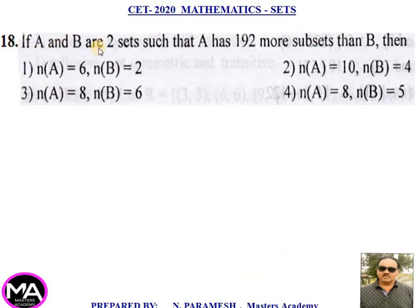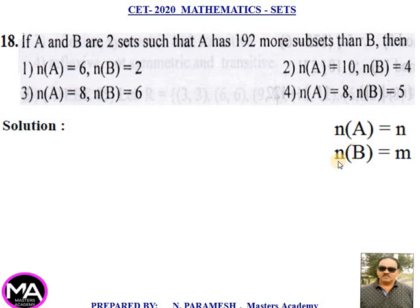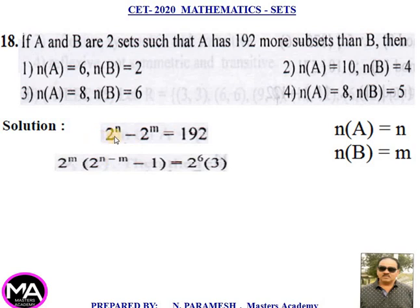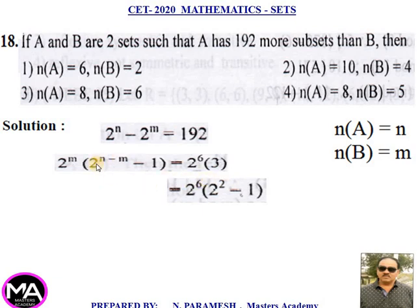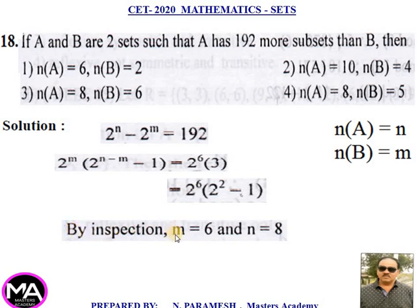18th question. If sets A and B are two sets such that A has 192 more subsets than B, find the number of elements. Solution: Let n(A) = n and n(B) = m. Then 2^n = 192 + 2^m, so 2^n − 2^m = 192. Factoring: 2^m(2^(n−m) − 1) = 2^6 × 3. Comparing: m = 6, and since 3 = 2² − 1, n − m = 2, giving n = 8. Therefore m = 6 and n = 8. That is option third.